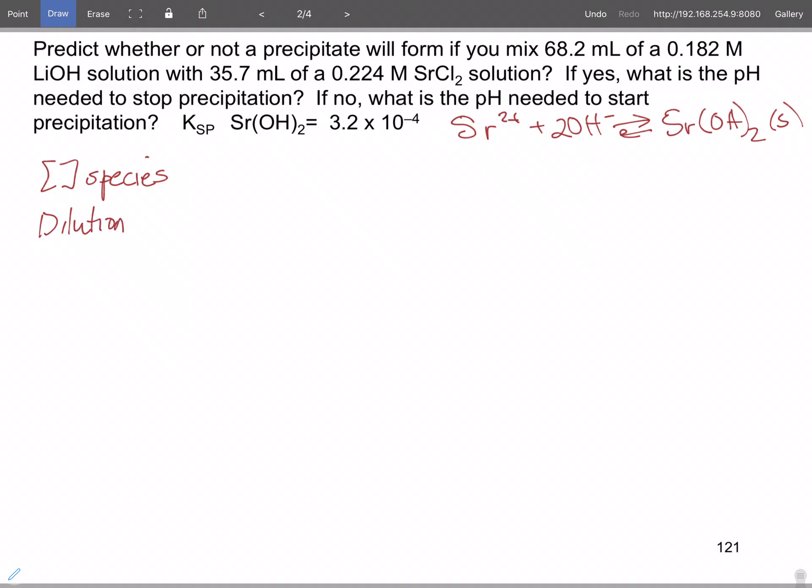Our volume is 35.7 milliliters plus 68.2 milliliters. So our volume total is equal to 103.9 milliliters.